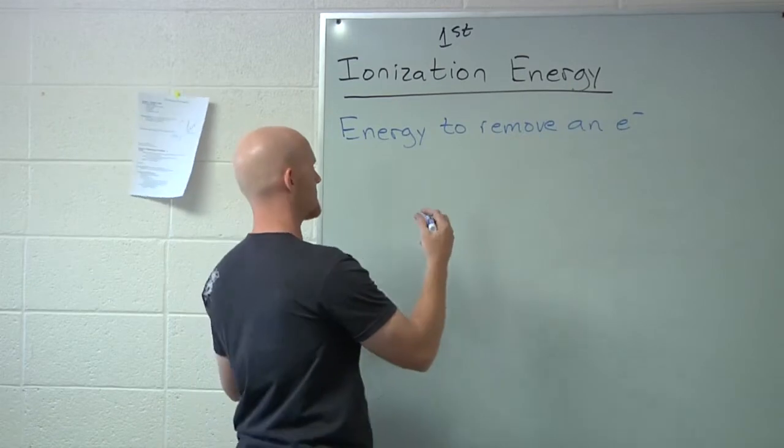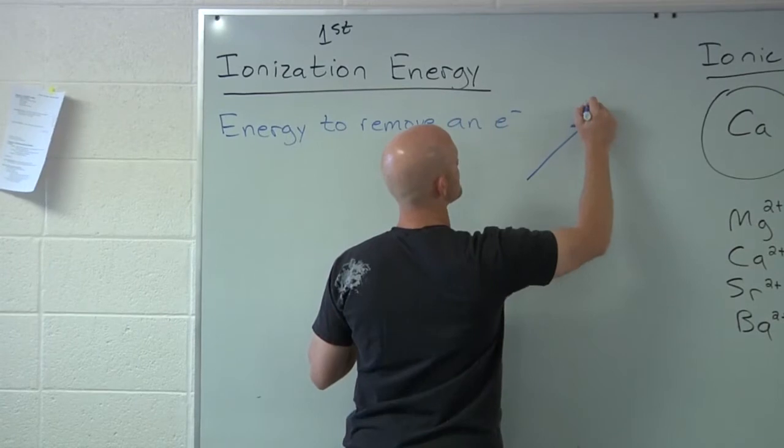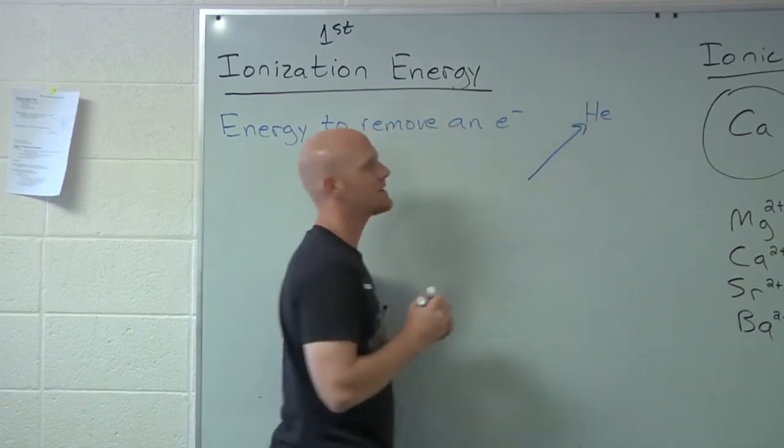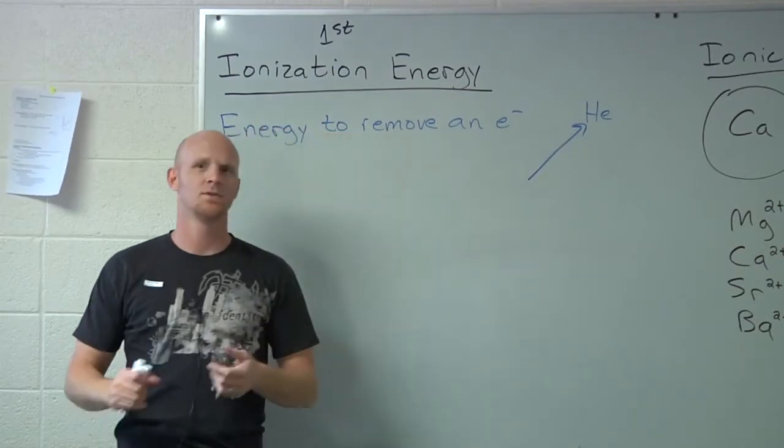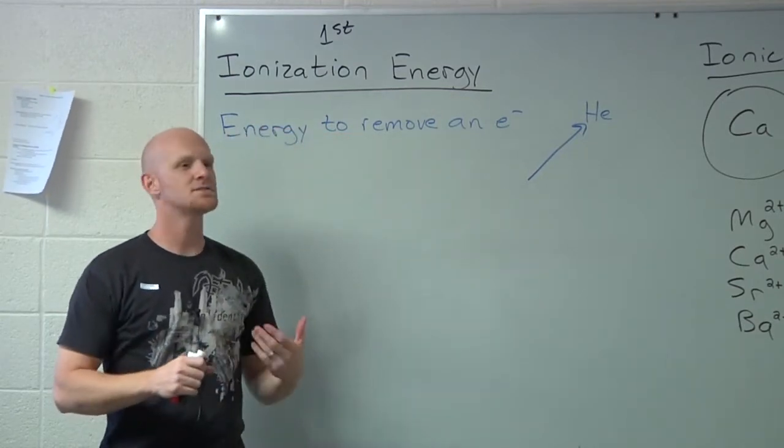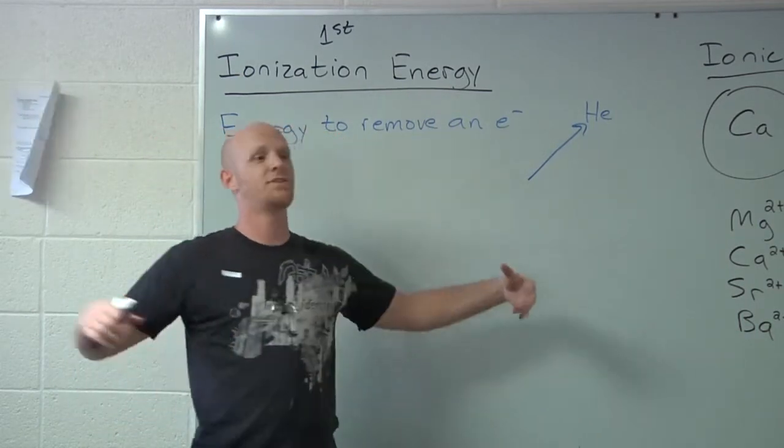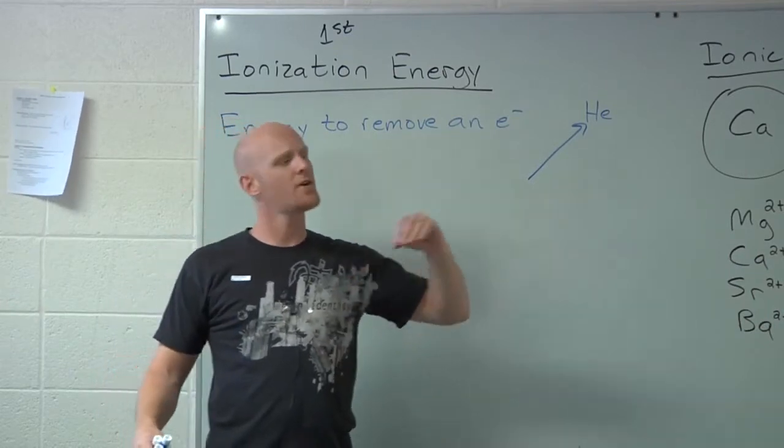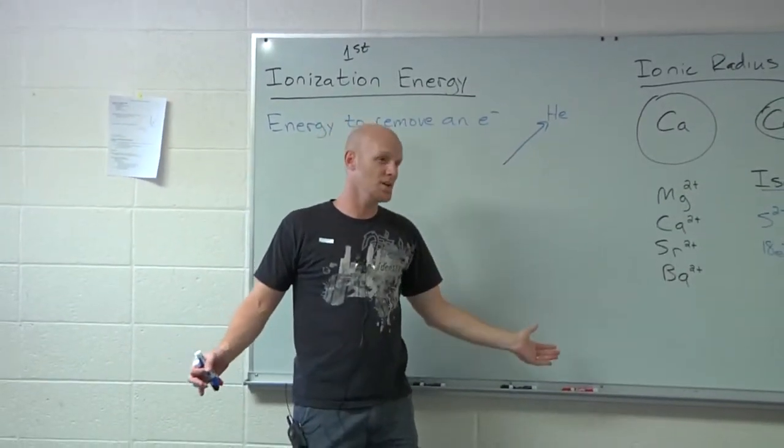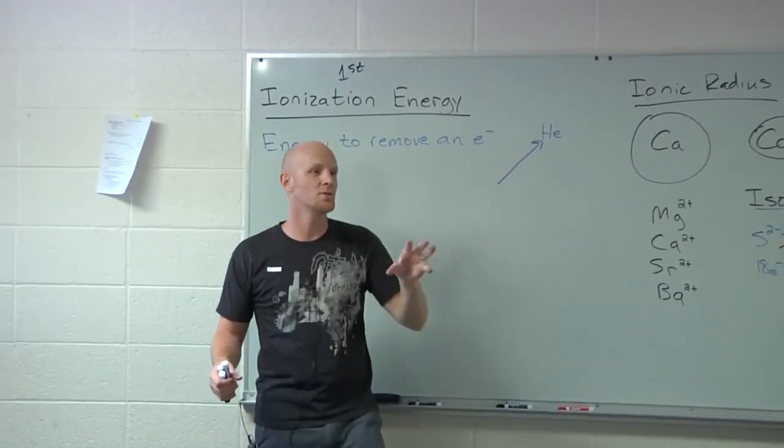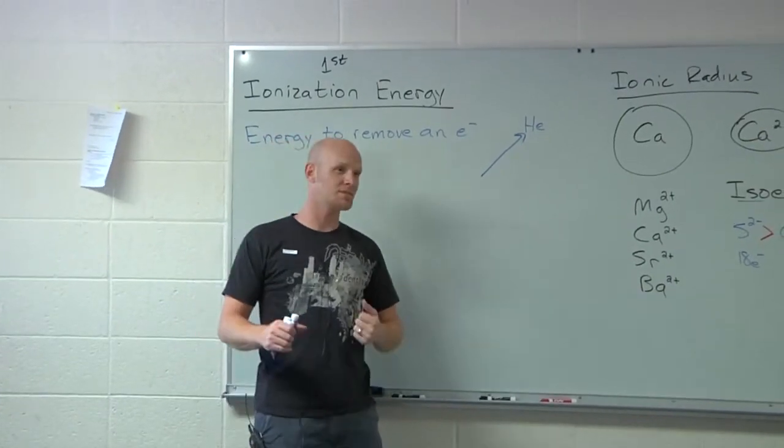The trend is opposite, goes to the upper right hand corner to helium, exactly opposite of what we saw for atomic radius. Notice francium's outermost electron, big fat francium, its outermost electron is way far away from the nucleus and its effective nuclear charge is only plus one. That electron is not very attracted to its nucleus. If I want to remove it, it's not going to be all that difficult. It'll cost me a little, but not a lot.